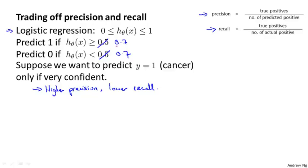We could take this even further. Instead of setting the threshold at 0.7, we could set it at 0.9, and predict y equals 1 only if we're more than 90% certain the patient has cancer. A large fraction of those patients will turn out to have cancer, giving us a high precision classifier. However, we'll have lower recall because we won't correctly detect all the patients who do have cancer.